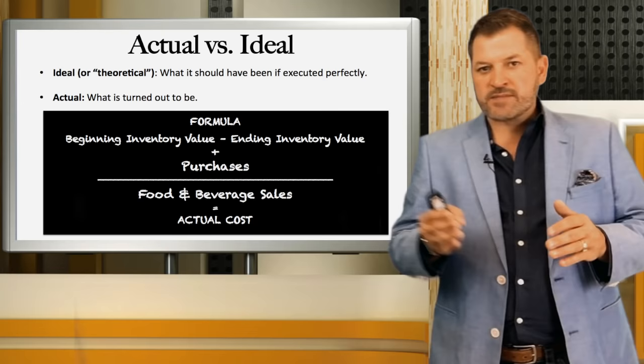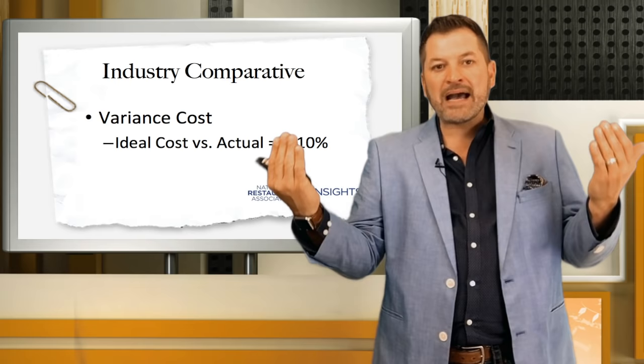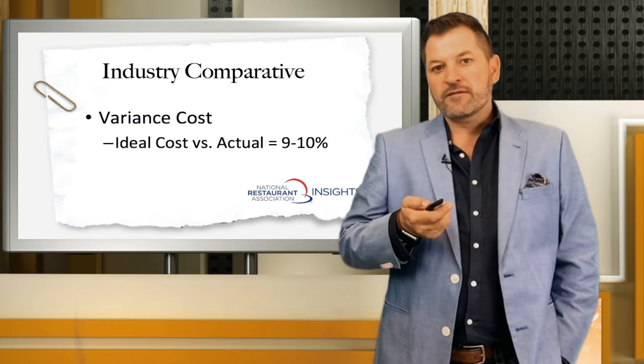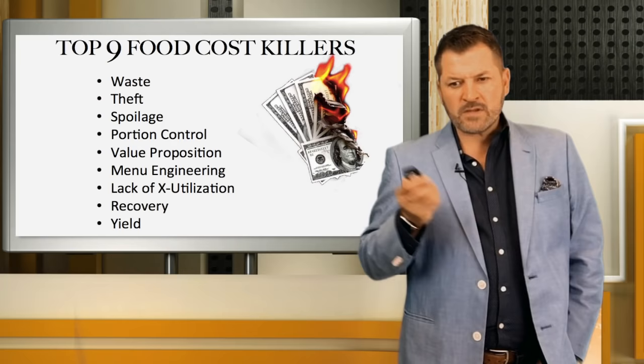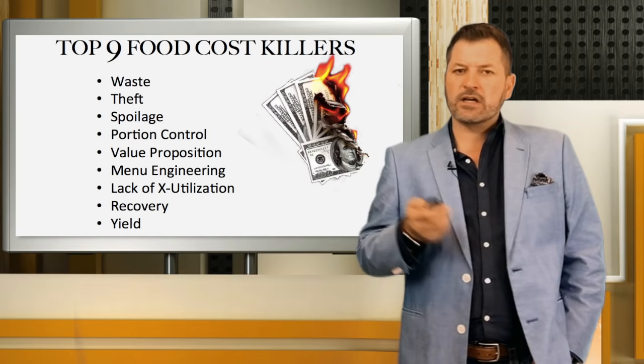The difference comes when we actually count our inventory at the end of the month, subtract beginning inventory from ending inventory, add total purchases, then divide by sales — that gives us our actual food cost. On average, the gap in most restaurants between what their food cost should have been and what it actually was is about 9 to 10%. That leads us to focus on the nine most critical culprits in this area.